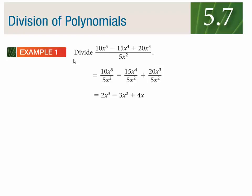Example number one, the easier one: notice whenever you're dividing by a single monomial on the bottom, all we're going to do is split this monomial under each and every single term in our numerator. So the 5x squared goes underneath the 10x to the 5th, and again under the second and third terms, and we just simplify them individually.